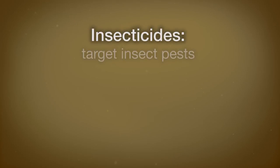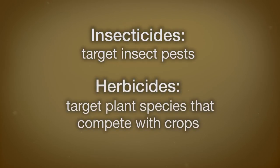Pesticides, natural or synthetic, might have been introduced. These are substances that kill or control organisms that people consider pests. Insecticides target insect pests. Herbicides target plant species that compete with crops. Pesticides have made agriculture more efficient, and their application is relatively easy. Pesticides often increase crop yield by preventing crop damage from pests.